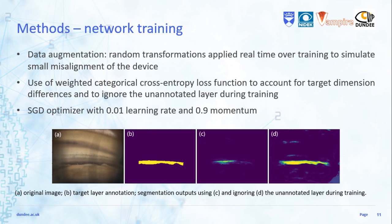The optimizer is SGD with a learning rate equal to 0.01 and momentum equal to 0.9. These parameters were chosen experimentally to avoid overfitting and local minima of the loss function.